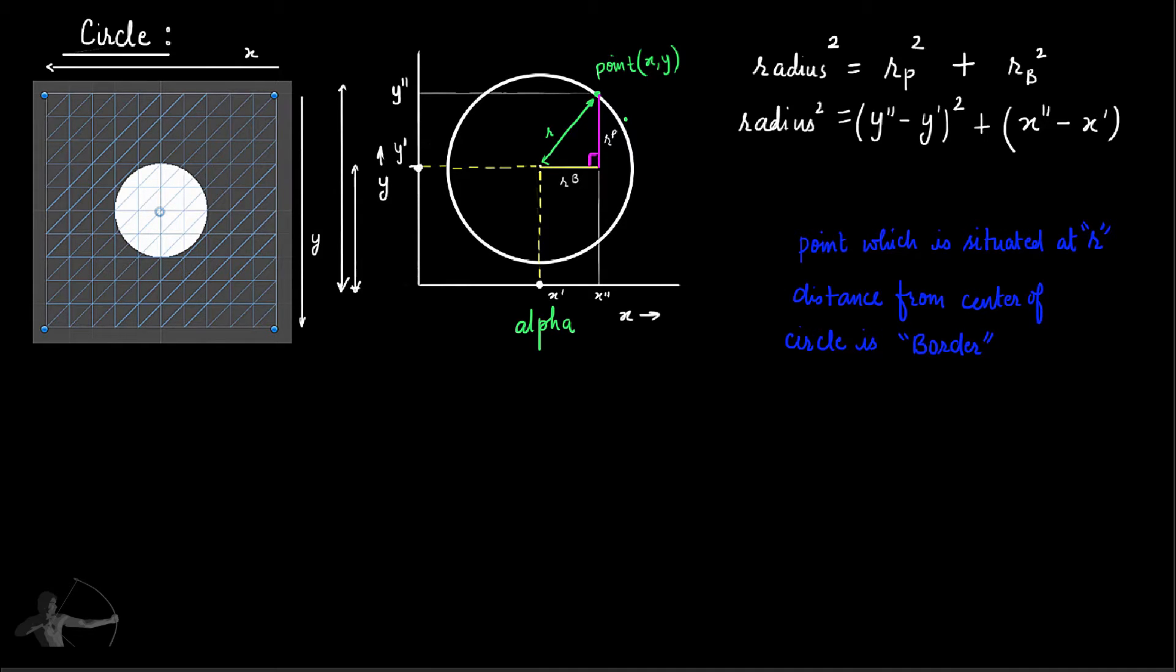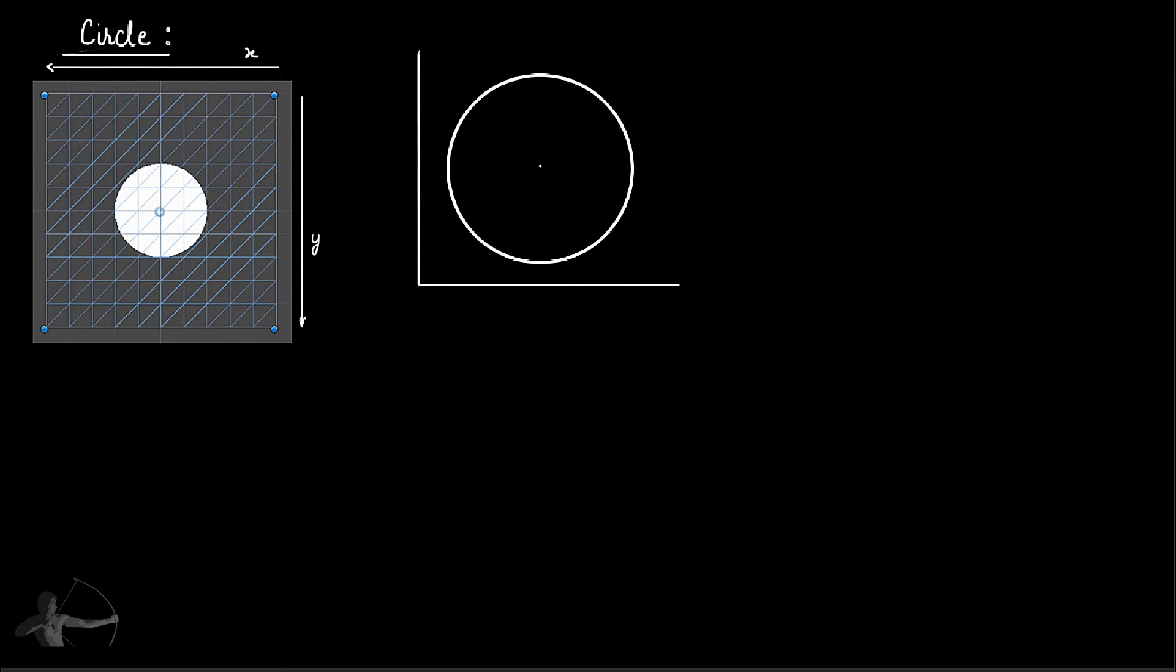Now instead of using X dash and Y dash notations we will use the variables that we are going to use in our shader so that we can directly translate this equation to our code. Let's hide this for a minute and create our radius line again.